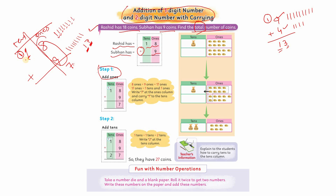تو اس کا مطلب یہ one اور یہ one آپس میں add ہو جائیں گے: one plus one ملے گا تو کیا بنے گا؟ Two! تو answer کیا آیا؟ Twenty-seven۔ یہ picture بنا کر آپ کو کتنی آسانی سے سمجھایا گیا ہے۔